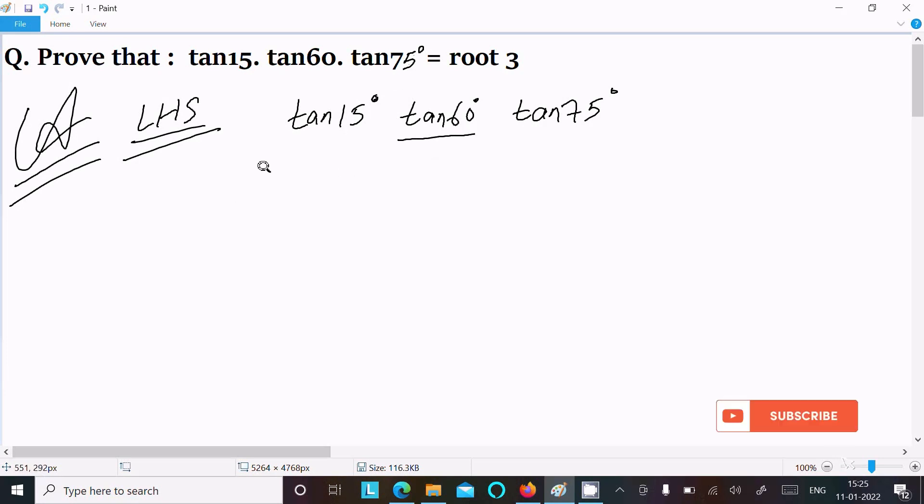So tan15 we can write as 90 minus 75. If you subtract this one, it's equal to 15. Tan(90-75) that is equal to 15. Then after here write tan60, and this tan75 we need to change.